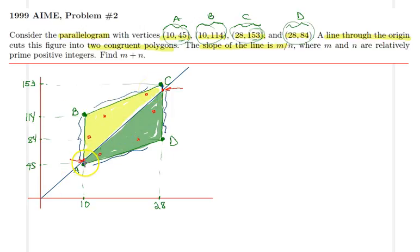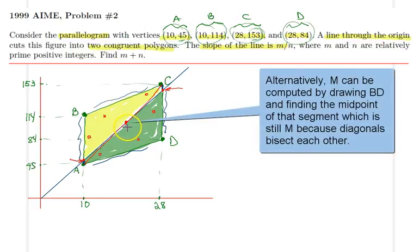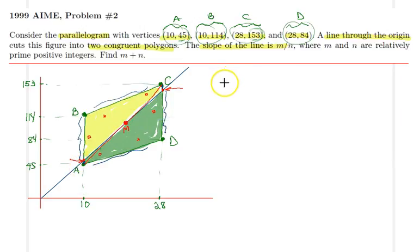Therefore, that midpoint here, let's call it M, is on that line for sure, because the midpoint is on both sides of the congruent polygons. So what are the coordinates of M? It would be the sum of the x coordinates, x sub A plus x sub C over 2, and the y coordinates will be y sub A plus y sub C over 2.